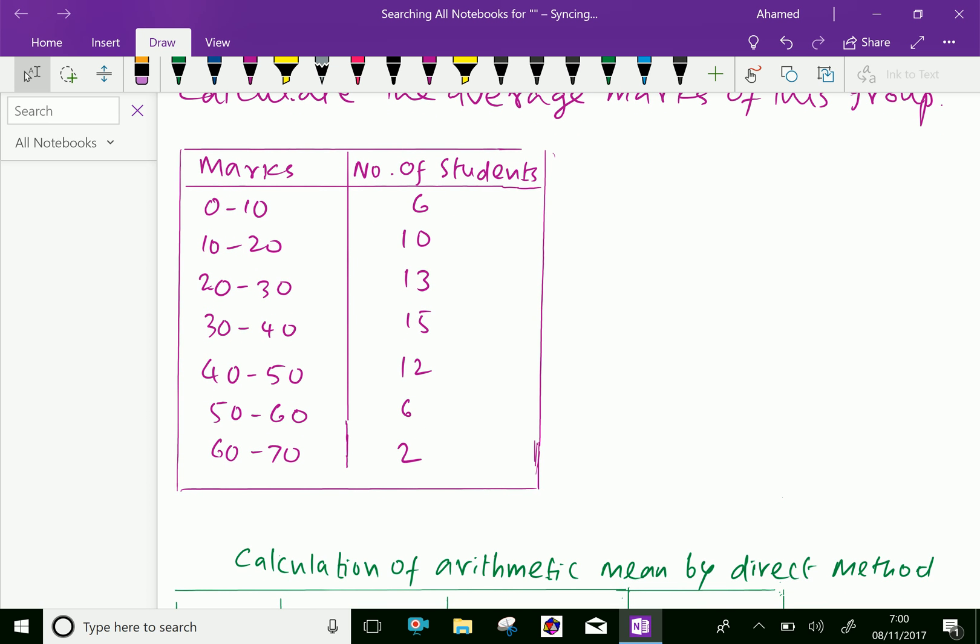Here, the table is given: marks and number of students. 0 to 10, 6 students; 10 to 20 marks, 10 students; 20 to 30, 13 students; 30 to 40, 15 students; 40 to 50, 12 students; 50 to 60, 6 students; and 60 to 70, 2 students.